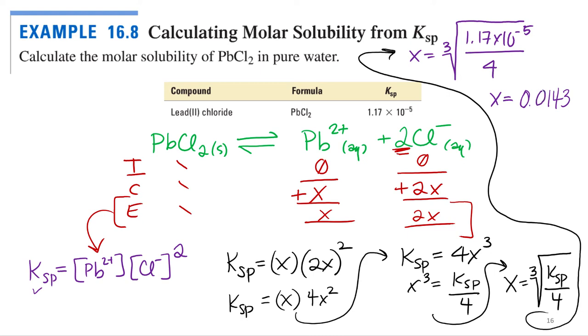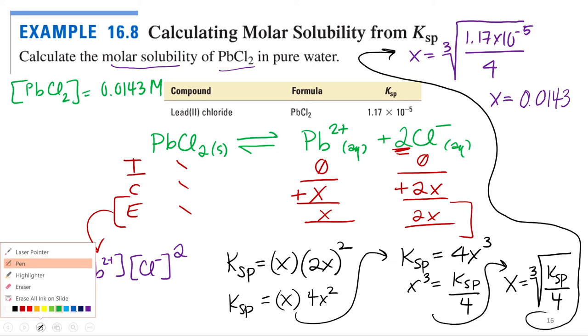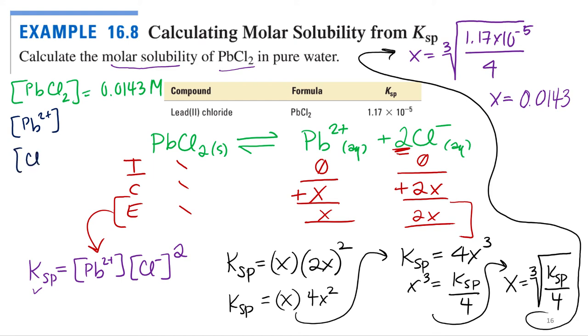Alright, so that's x, which, if you're calculating the molar solubility of the compound, that's what it is, okay? So the molar solubility with units of molarity is x. So 0.0143 molar. What if I wanted individual ion concentrations? What are they? What would be my lead concentration? 0.0143. It's the same thing? Yeah, you're right.